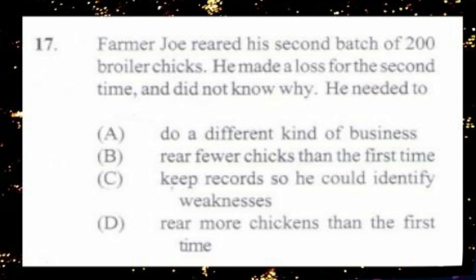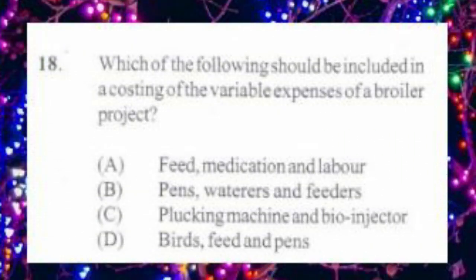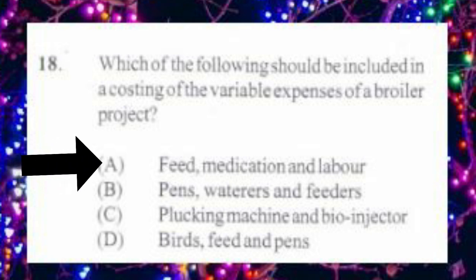Question number 18. Which of the following should be included in a costing of the variable expenses of a broiler project? A. Feed, medication and labor, B. Pens, waterers and feeders, C. Plucking machine and bio-injector, D. Birds, feed and pens. The answer is A, feed, medication and labor. Of course, all equipment would be a fixed expense.